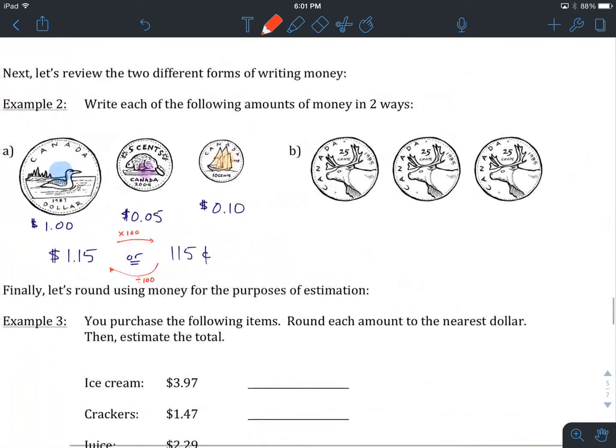At this point, I'd like you to hit pause and try B on your own. We're writing it in two different ways. Tally up how much you have, then write it as both dollars and cents. When that's done, come on back.